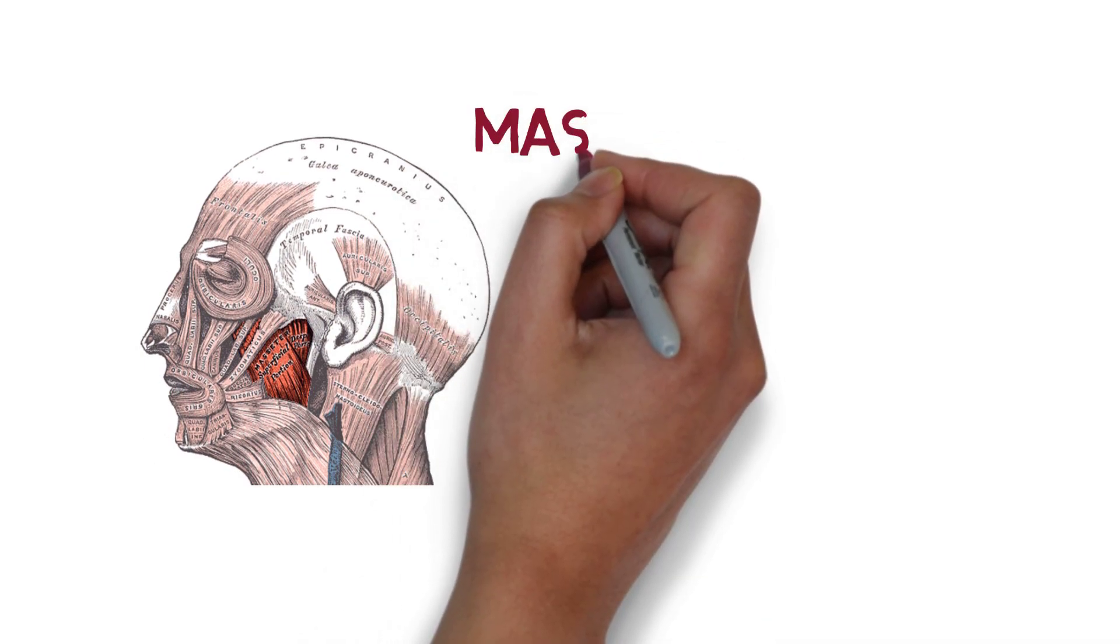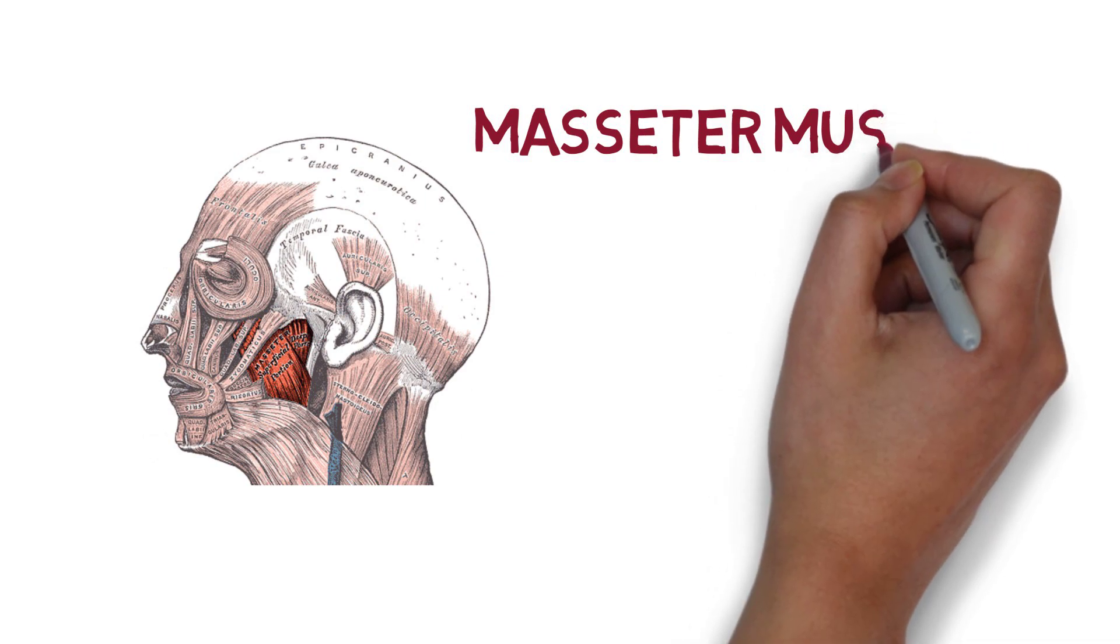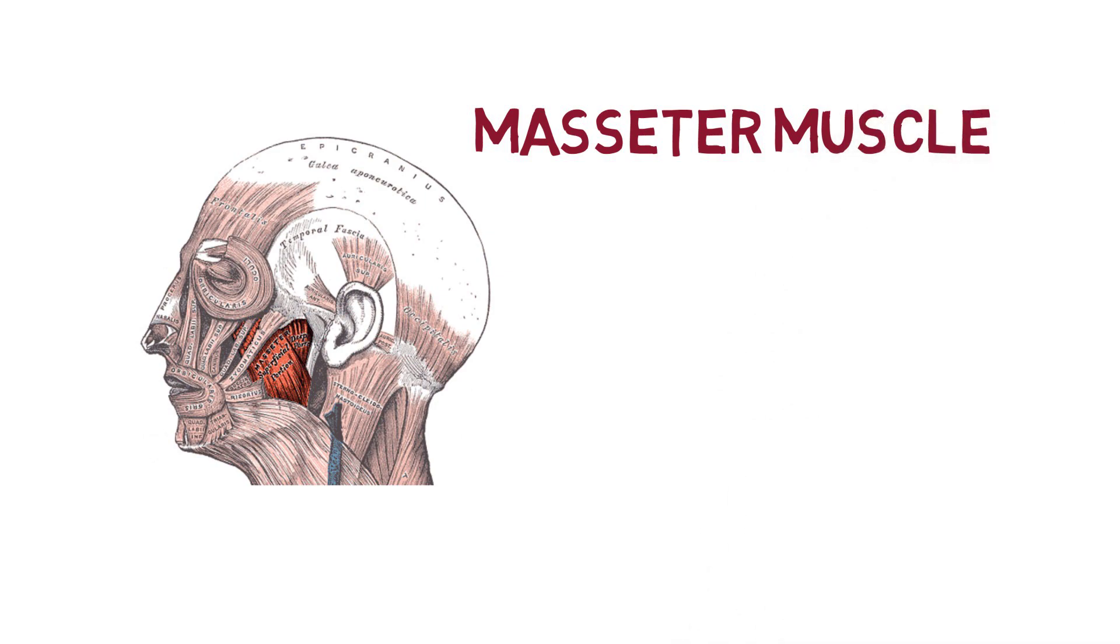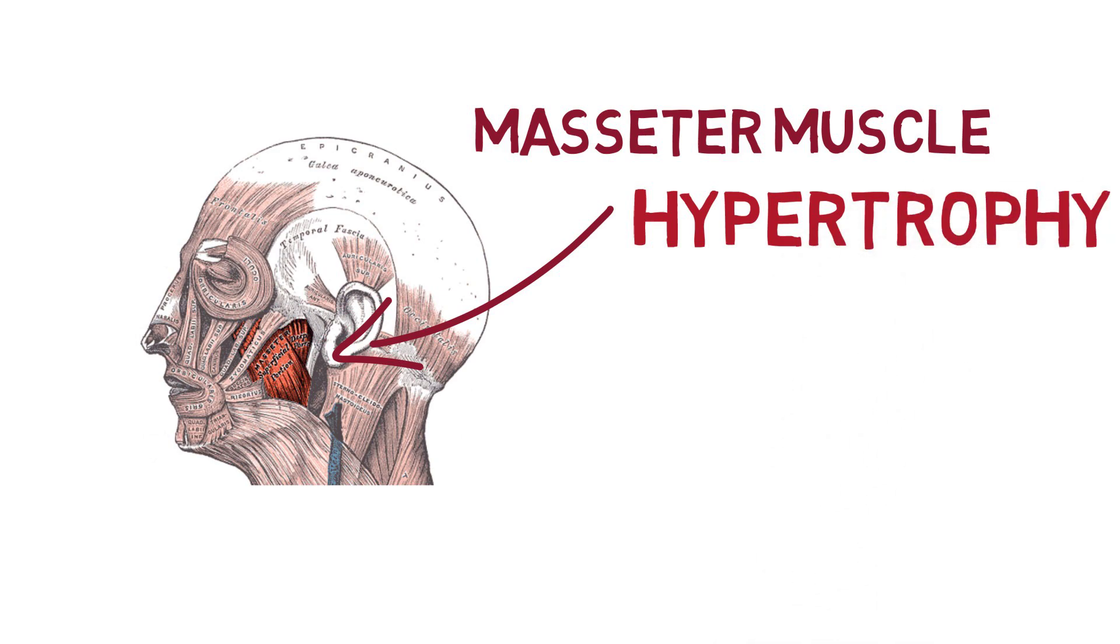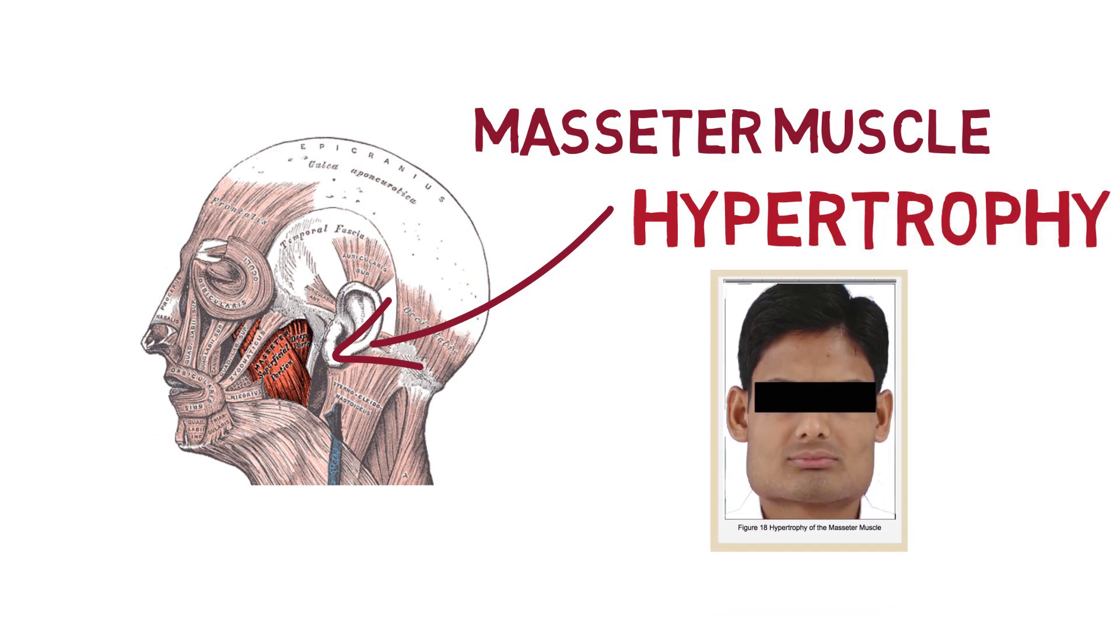So the largest and most visible jaw muscle is called your masseter muscle. And having a big one definitely isn't automatically a good thing. In fact, masseter muscle hypertrophy, aka a big jaw muscle, is actually a medical condition which people seek treatment for because they find it to look unaesthetic.